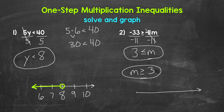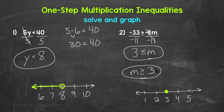Now let's graph. We draw a number line with three in the middle and a couple of numbers on both sides: one, two, three, four, five. M is greater than or equal to three, so three is included — it is a solution — so we need a filled circle at three. Then we draw an arrow going right, the direction of everything greater than three. The filled circle shows we are including three, and the arrow to the right represents all values greater than three.